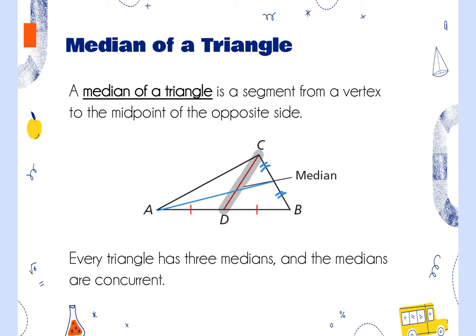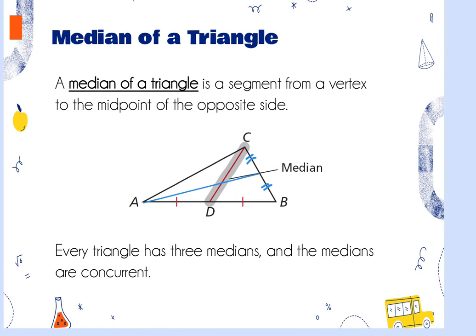If I wanted to draw the median from vertex A, I'd go from A to the midpoint of CB. If I wanted the median from angle B, I'd find the midpoint of AC and draw to it. That would be the last median, and all three meet at one point, whose name you're about to learn.